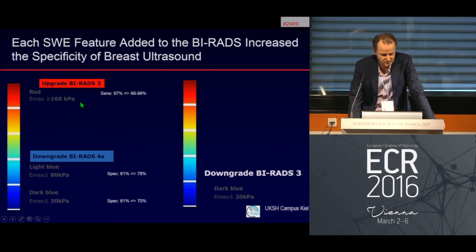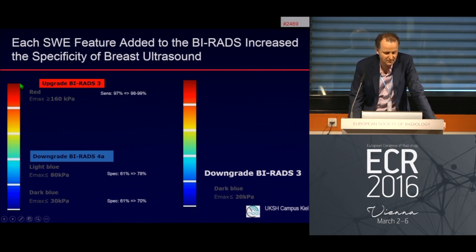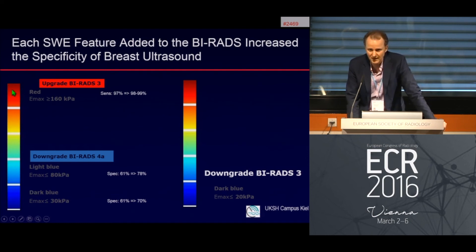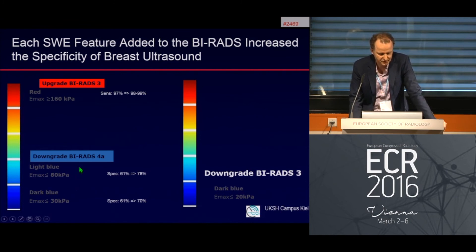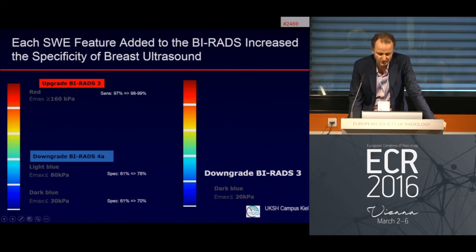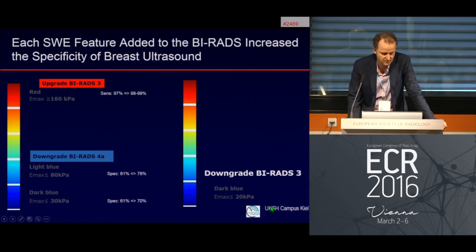Each shear wave feature added to BI-RADS can increase specificity. If we add red color to a BI-RADS 3 lesion, we should upgrade to biopsy because of higher malignancy potential. If a BI-RADS 4a lesion shows light blue or dark blue color, we could downgrade to follow-up. Similarly, BI-RADS 3 lesions with dark blue color on shear wave imaging and elasticity maximum less than 20 kilopascal can also be downgraded.